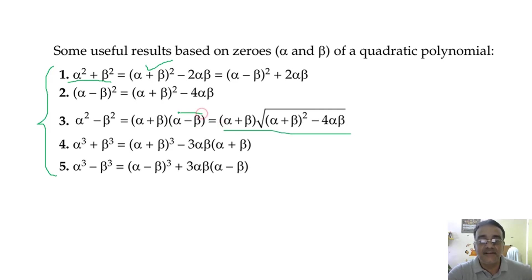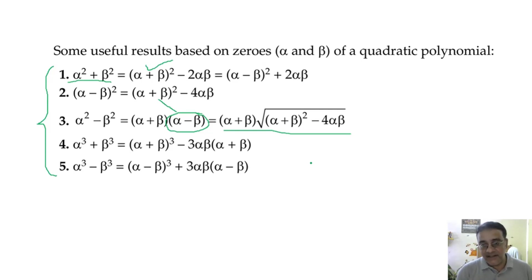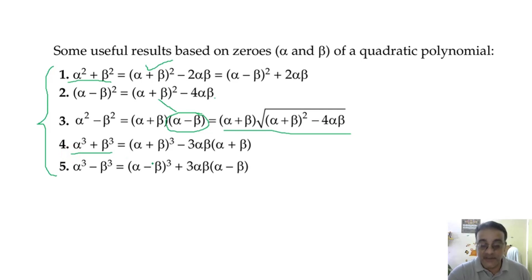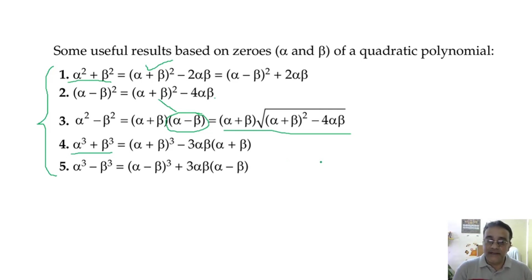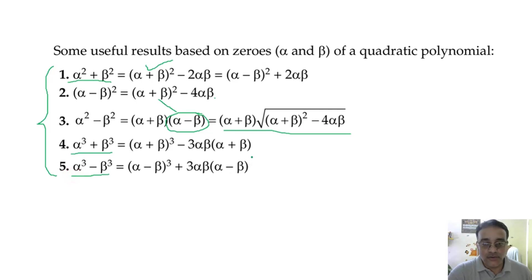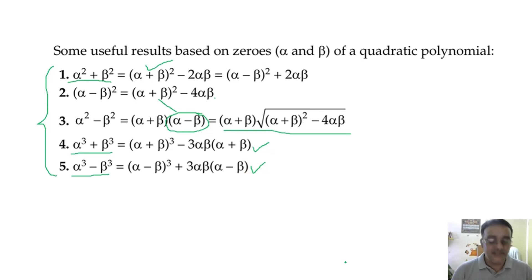For α³ + β³, the formula is (α + β)³ − 3αβ(α + β). Similarly for α³ − β³ there is a corresponding formula from class 9. You have to use these formulas as required. Usually α² + β² = (α + β)² − 2αβ is used most often.